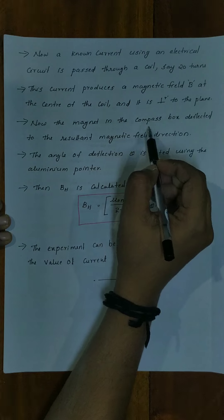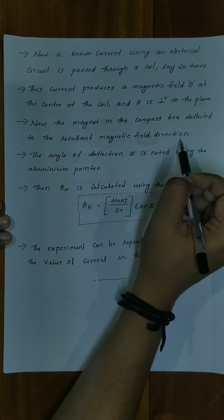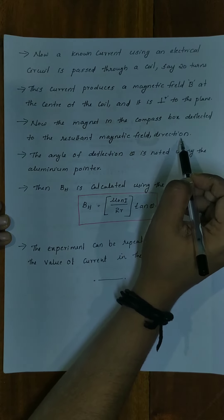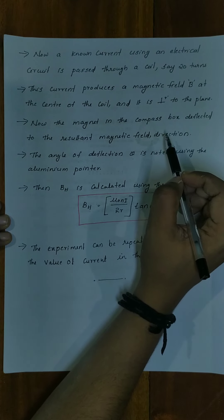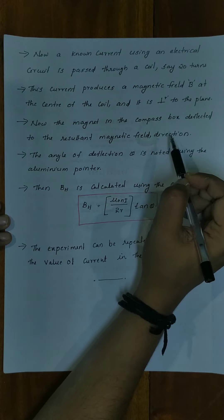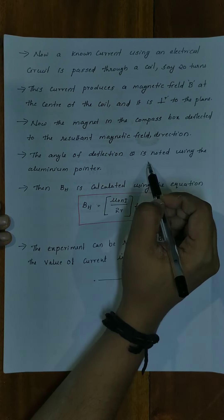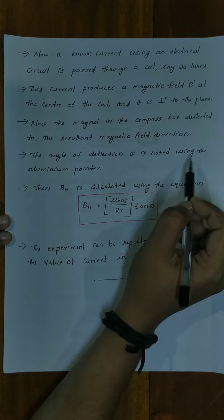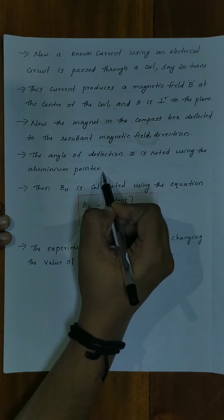The magnet in the compass box deflects to the resultant magnetic field direction. The angle of deflection theta is noted using the aluminum pointer.